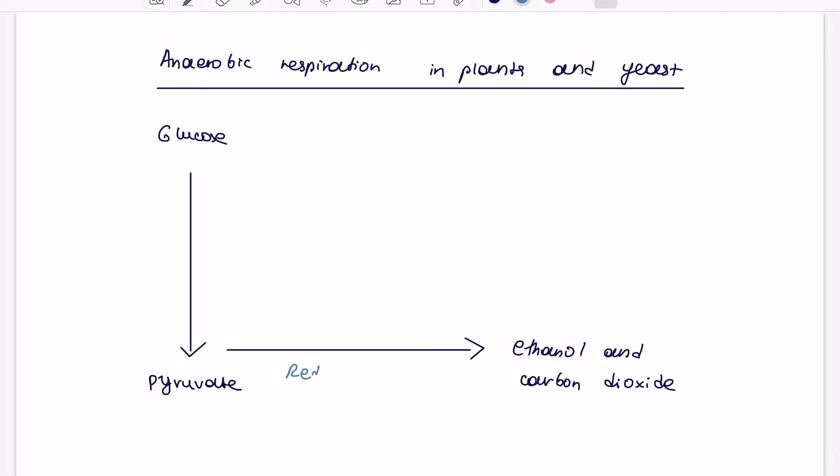And again, similarly, that means if it's a reduction reaction, we're using reduced NAD to transfer its hydrogen to pyruvate. And then NAD will be regenerated in this case, and the glycolysis can keep happening.